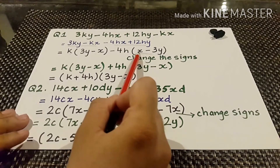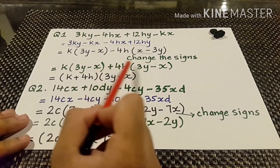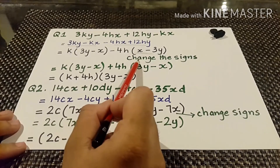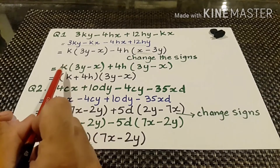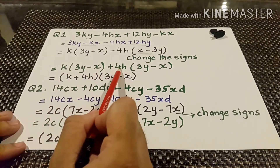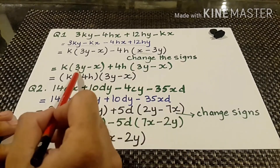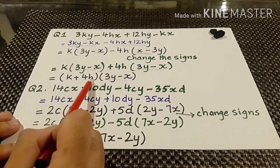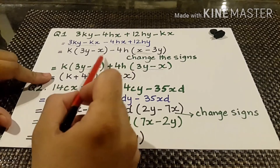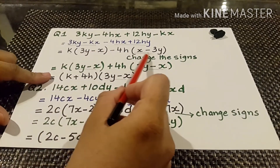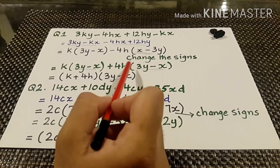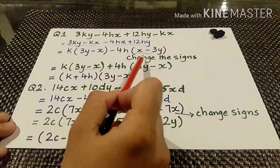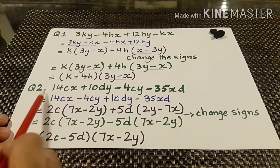We can change the sign here — if we take plus outside, x minus 3y can be rewritten as 3y minus x. Applying this condition it becomes k times 3y minus x plus 4h times 3y minus x. Now 3y minus x can be taken as a common factor and k plus 4h is the first factor. In this way we solved this question because the values are same and only the signs are different, so we correct them by changing the sign.